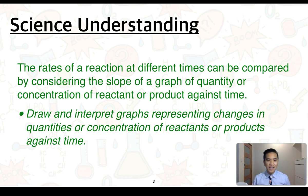Our first understanding is the rates of a reaction at different times can be compared by considering the slope of a graph of quantity or concentration of reactant or product against time. You will need to be able to draw and interpret graphs representing changes in quantities or concentration of reactants or products against time.